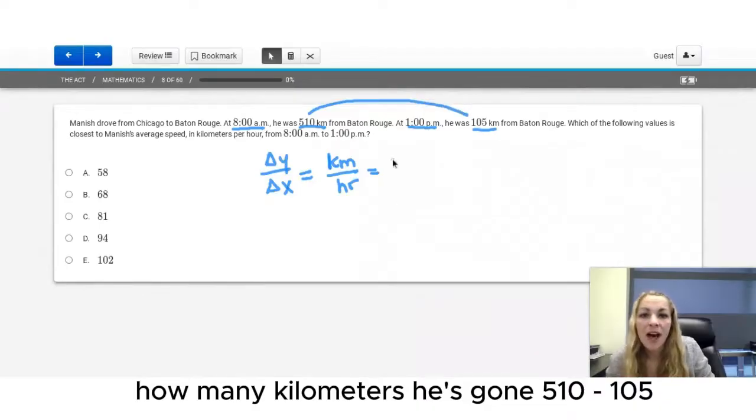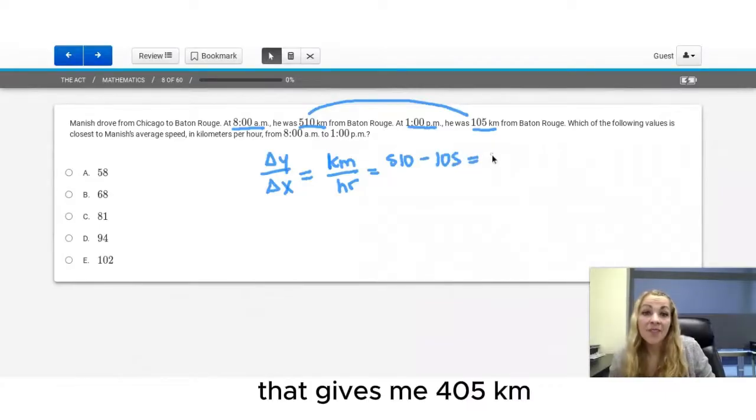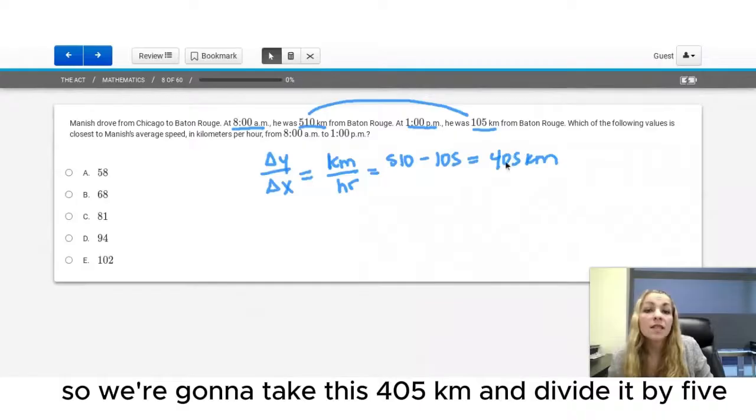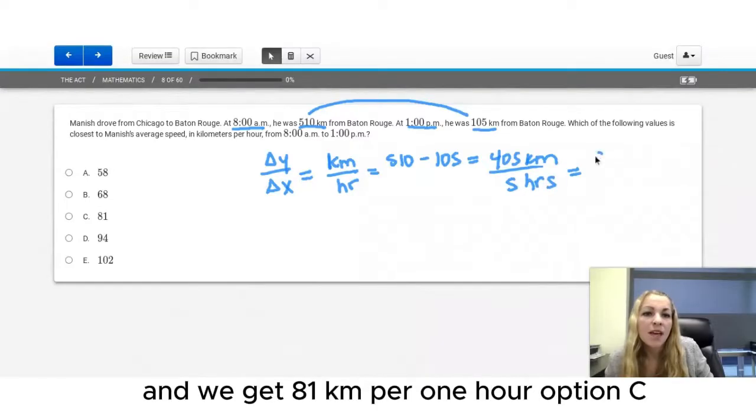So we need to figure out how many kilometers he's gone. 510 minus 105, that gives me 405 kilometers, and between 8 a.m. and 1 p.m., five hours have passed. So we're going to take this 405 kilometers and divide it by five, because five hours have passed, and we get 81 kilometers per one hour. Option C.